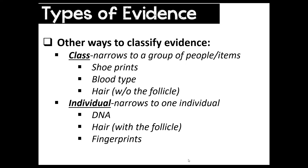Hair left at a crime scene without a follicle is also class evidence. The follicle is the part of the hair that contains nuclear DNA — if that's missing and no DNA can be collected, it's just class evidence such as 'a short brown curly hair.' Individual evidence, by contrast, can link directly to a specific person. DNA is a great example. Hair with the follicle can yield DNA. Fingerprints are also individual evidence — if a lifted print is matched to a suspect, that's individual evidence.